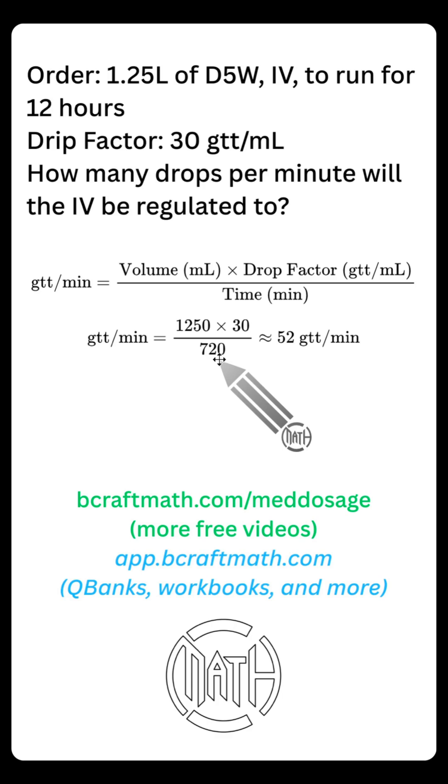So you're still having to do some conversions in this problem, but the formula does work. And if you multiply 1250 times 30 divided by 720, rounding to the nearest whole number, you will get approximately 52 drops per minute. Nothing wrong with that.